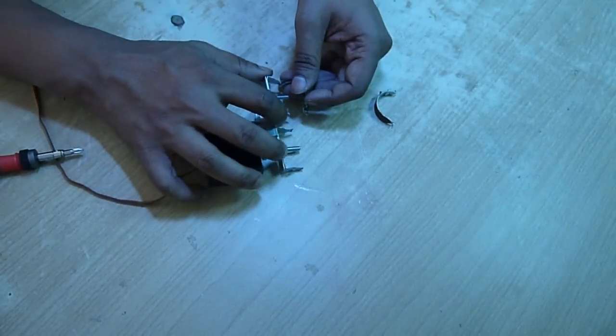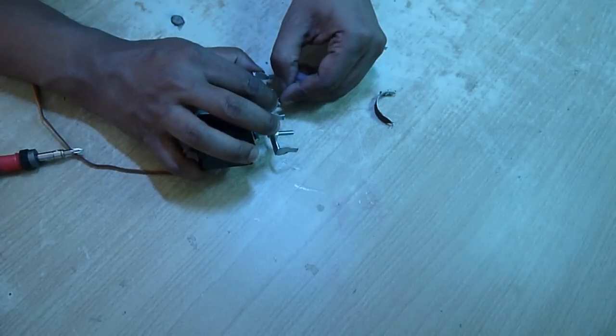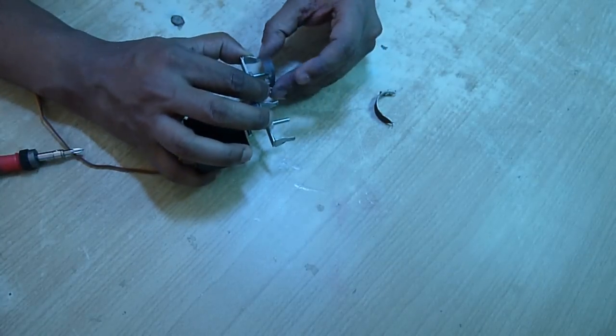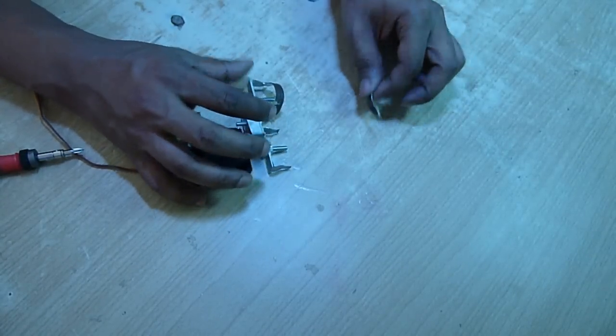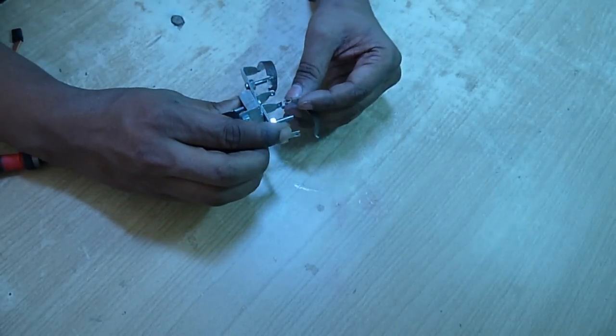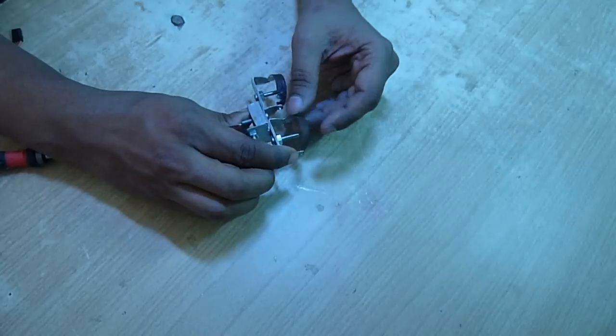Now connect that with the eyeball holder which is part three like this. Make sure it is freely moving. I have painted both the eyelids with brown color.